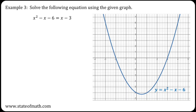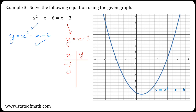For example 3, the left-hand side is the same as before: y equals x squared minus x minus 6, already on the grid. For the right-hand side, I get y equals x minus 3. This time I'll need to make a small table of x and y values. I'll select minus 3, 0, and 3. Plugging these into the formula gives minus 6, minus 3, and 0. Plotting these on the grid gives the following line. Again, I have two points of intersection with x-coordinates being minus 1 and 3.